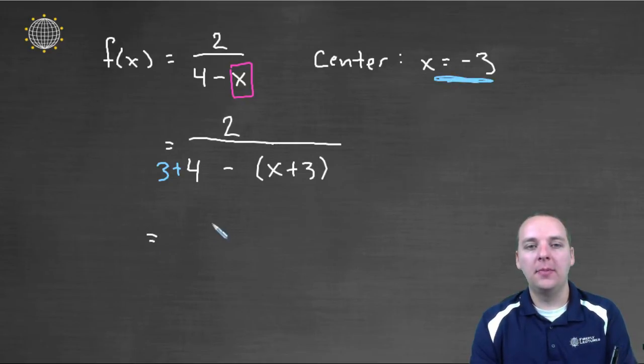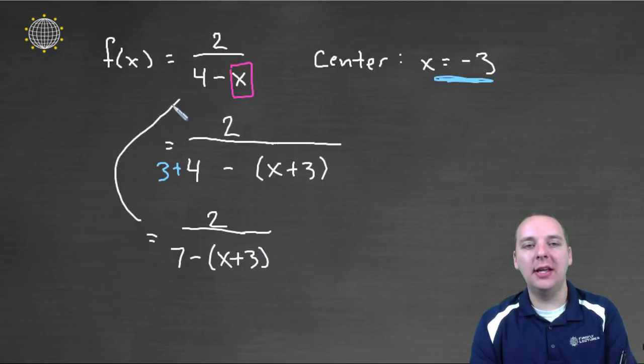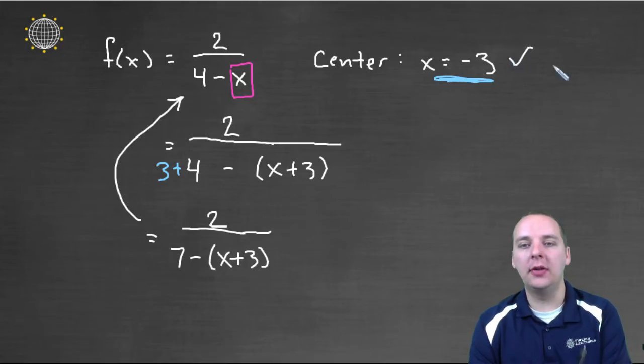OK, so let me rewrite this now, 2 over, this will actually be 7 minus x plus 3. This is the same actually as the original function. OK, if you don't believe me then you could always just distribute this negative, we can do it real quickly in our head, 7 minus x minus 3, 7 minus x minus 3, that's 4 minus x. Right? So I've manipulated this so that it's centered correctly.